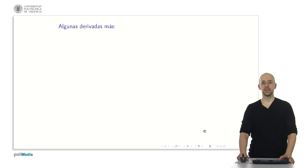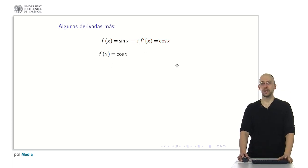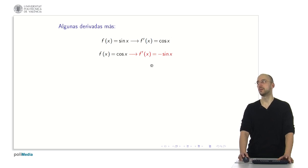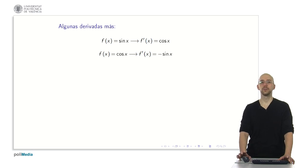Now let's see derivatives of elementary functions. The derivative of sin(x) is cosine of x. The derivative of cosine of x is minus sine of x. Pay close attention to this minus sign — the derivative of cosine is minus sine, and it's very easy to forget that negative sign. Another important function is tangent of x, which is sine of x divided by cosine of x, but I won't include its derivative here because you'll see it when we discuss the derivative of a product of functions.